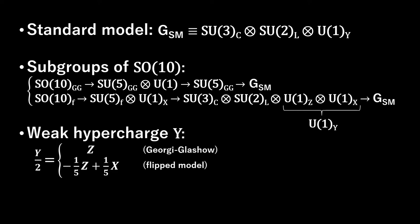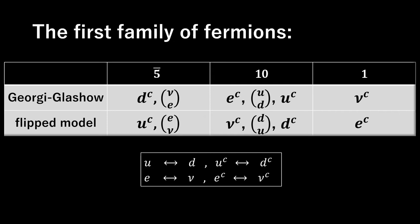The first family of fermions in flipped SU-5 representations is listed in the bottom row of the table. Note some curious features of the multiplets shown here.